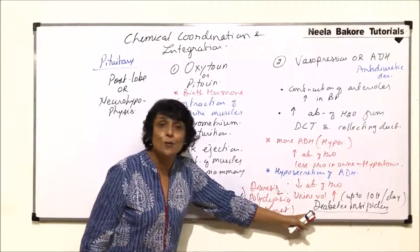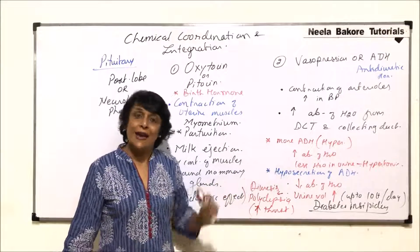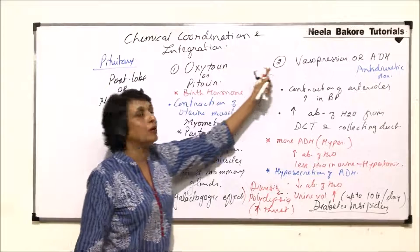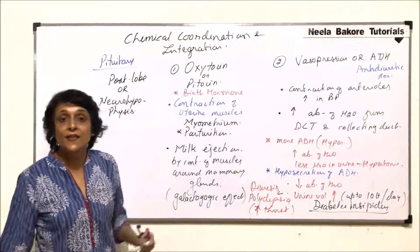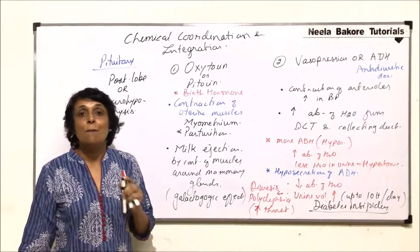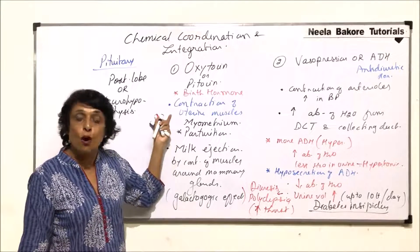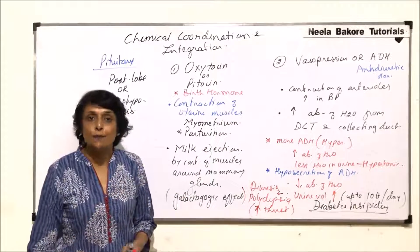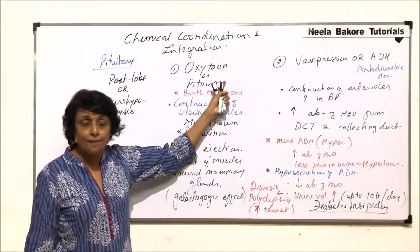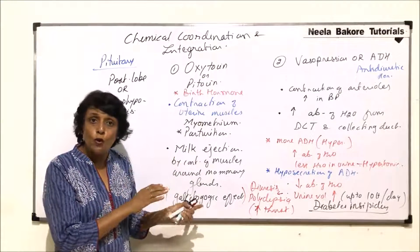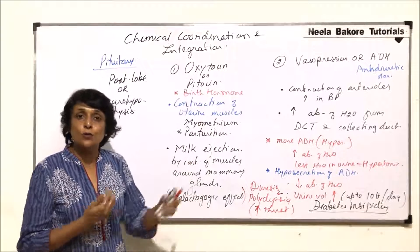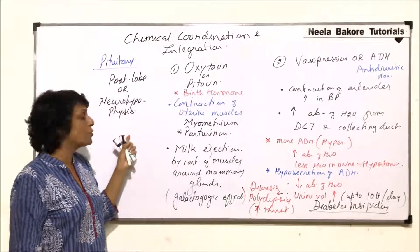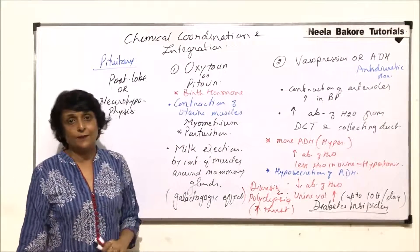The important thing which we have to remember is both these hormones are synthesized in hypothalamus but secreted by posterior lobe of pituitary. We have talked about this - that the neurosecretory cells of hypothalamus synthesize them in the axon. These hormones remain stored, but when it comes to release of these hormones, they get released from the posterior lobe. So both these hormones are of posterior lobe of pituitary.